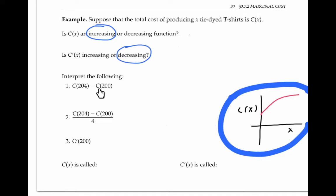C(204) minus C(200) represents the additional cost for making 204 t-shirts instead of 200. Informally, you might think of that as the cost of making the last four t-shirts.